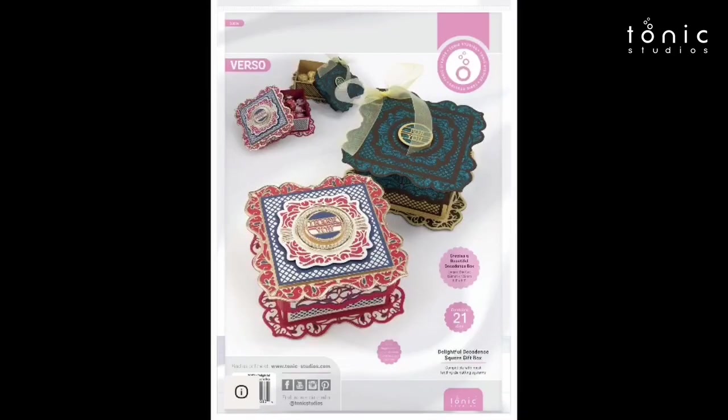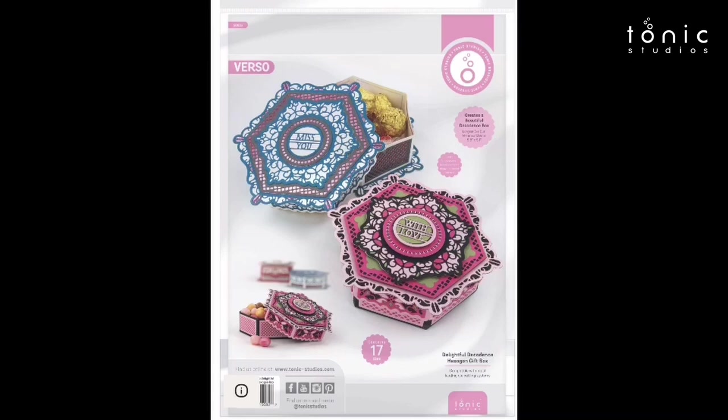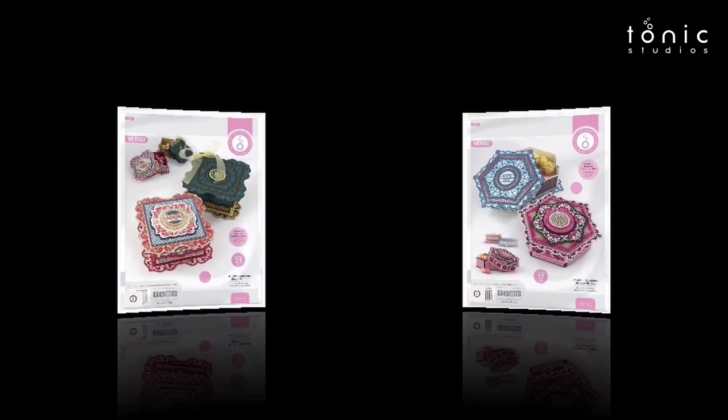You're getting two different ones - the decadent hexagon and the decadent square - and they're going to give you beautiful boxes. Absolutely gorgeous. Whether you're making the square one or the hexagon one, they're going to look beautiful. You can cross-pollinate those tops if you want, that's entirely up to you.